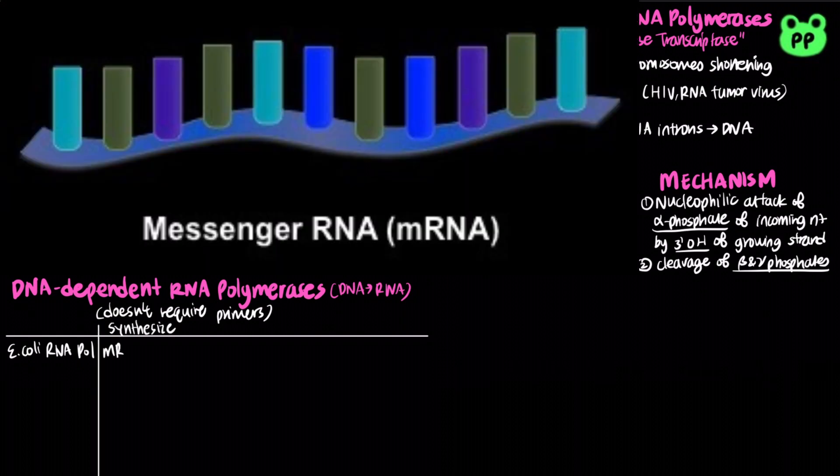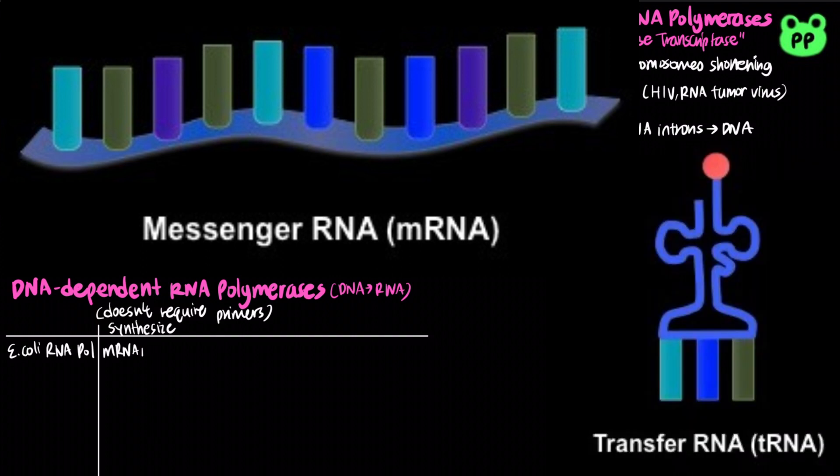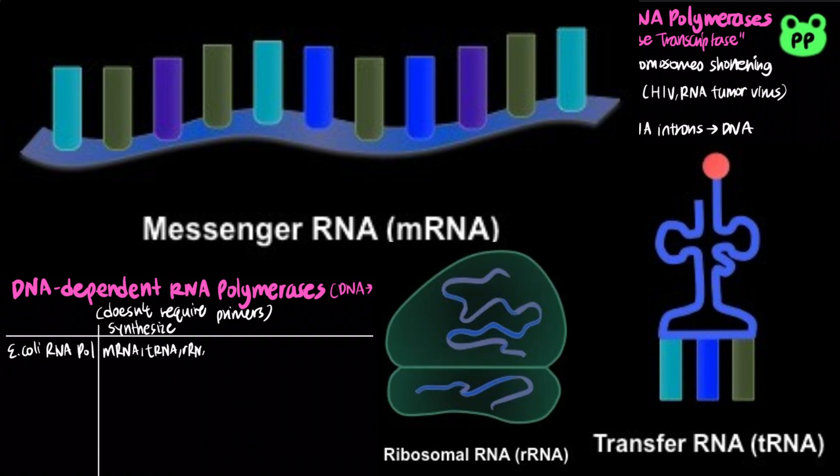Messenger RNA or mRNA, which functions in transcription and translation as codons. Transfer RNA or tRNA, which functions in translation as anticodons. And ribosomal RNA or rRNA, which are components of the ribosomes where translation takes place.